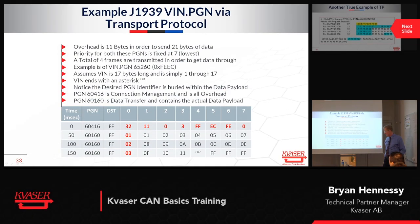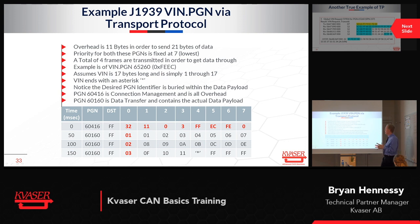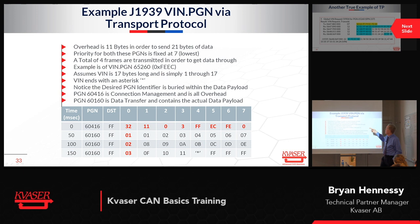This is an arbitrary example, originally pulled from the internet, of transport protocol. In automotive work, you sometimes want to send the vehicle identification number on the CAN bus. The VIN is more than 8 bytes, and a CAN frame will only send 8 bytes of data, so we're going to send it in 4 different frames. There's a lot of overhead associated with transport protocol — 11 bytes of overhead to send 21 bytes of data — so you lose some efficiency.